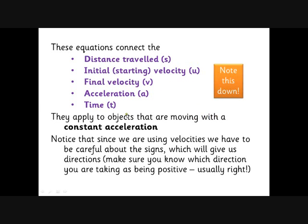First of all we'd better say what SUVAT is. We've got five things we need to know about: the distance travelled S, or more correctly displacement; the starting velocity U; the final velocity V; acceleration A; and time T. They apply to objects that are moving with a constant acceleration. Notice that since we are using velocities we have to be careful about the signs, which will give us directions. Make sure you know which direction you are taking as being positive—usually right and upwards.